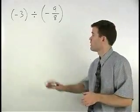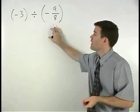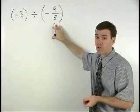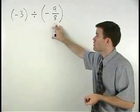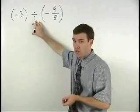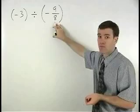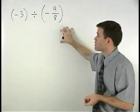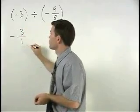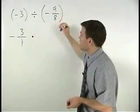It's important to understand that dividing by a fraction means the same thing as multiplying by the reciprocal of that fraction. In other words, we can simply change the division symbol to multiplication and flip the second fraction. So we can rewrite this problem as negative 3 or negative 3 over 1 times negative 9 over 8.